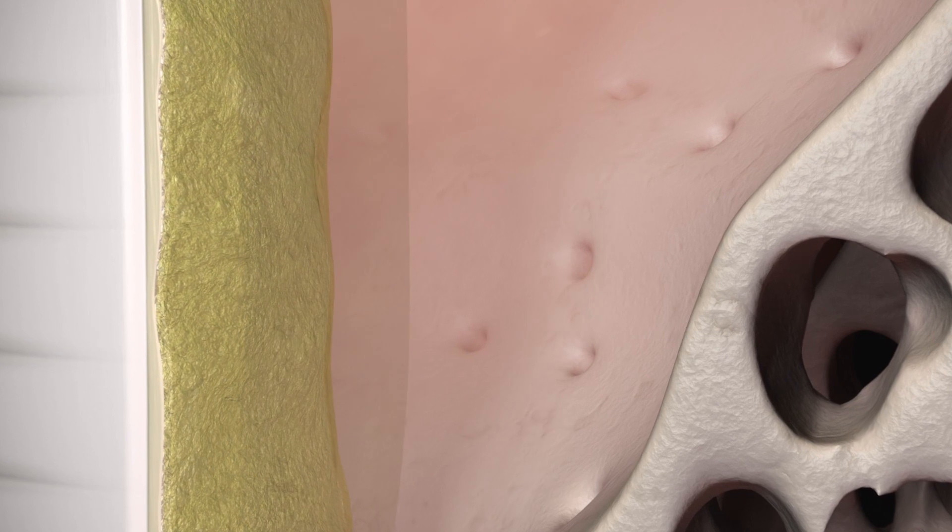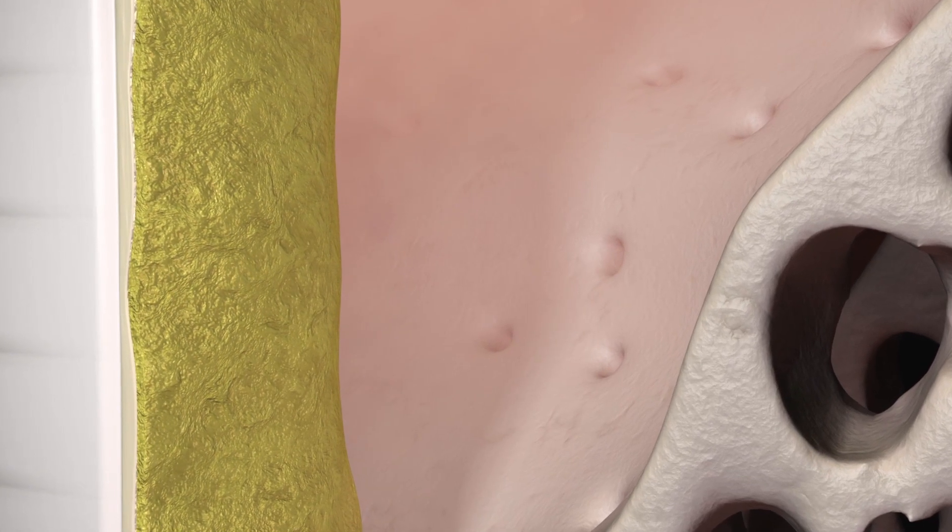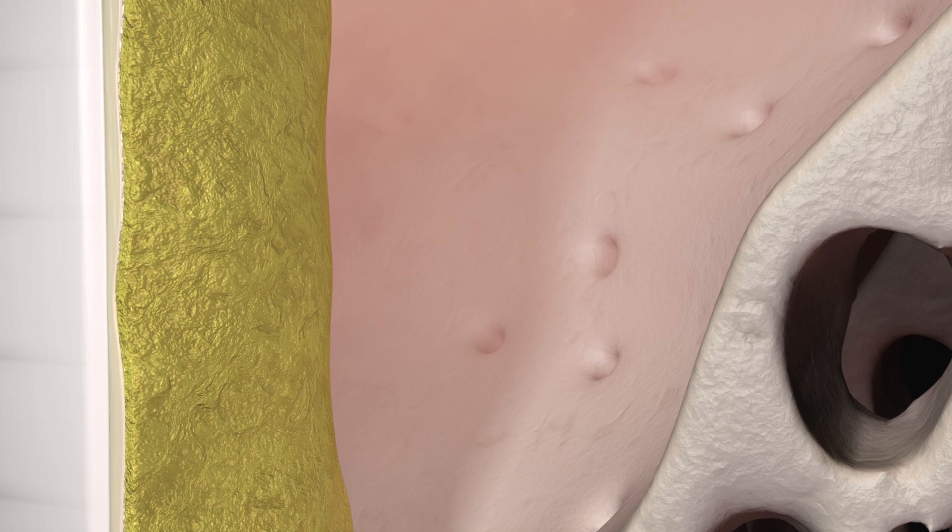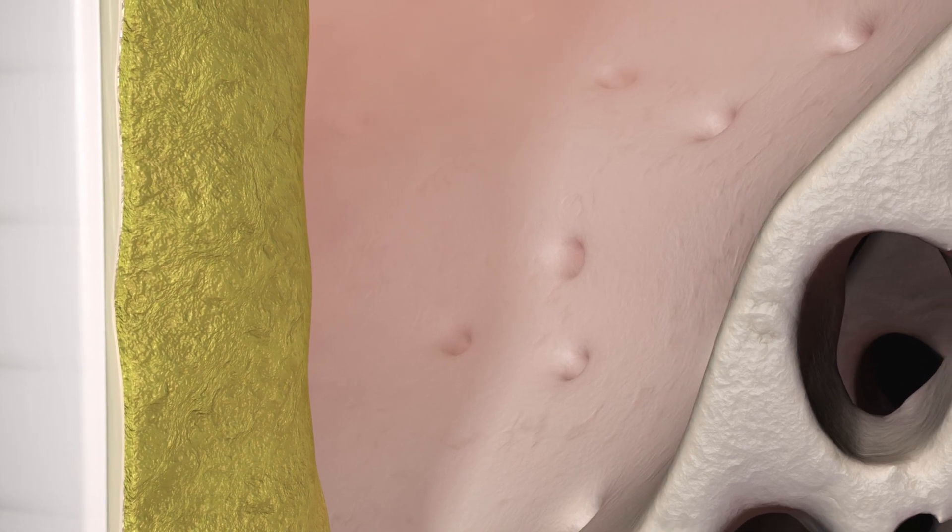Once applied, the Straumann Emdogain proteins, the amelogenins, precipitate out in seconds and form a matrix layer on the root surface.